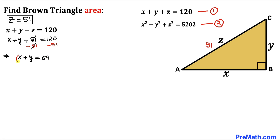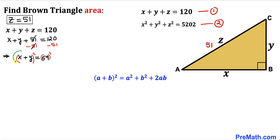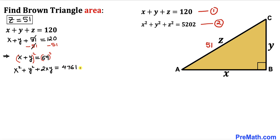Now let's square both sides: (X plus Y) squared equals 69 squared. Recalling the identity (A plus B) squared equals A squared plus B squared plus 2AB, and applying it to the left side, we get X squared plus Y squared plus 2XY equals 4761. Let's label this as equation number three.